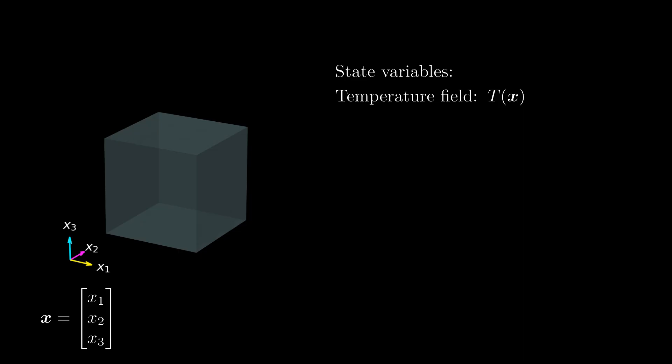Besides the temperature, other state variables can be likewise described by fields. Another example of a field is the displacement field u. In contrast to the temperature field, the displacement field gives us at each point a vector with the three components u1, u2 and u3. u1 describes the displacement in x1 direction, u2 in x2 direction, and u3 in x3 direction. Each of these components u1, u2 and u3 can be interpreted as scalar fields. And together they form a so-called vector field.